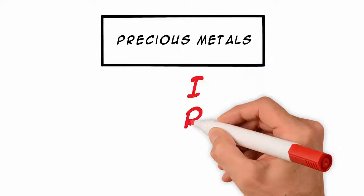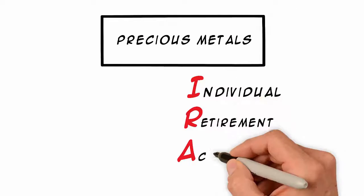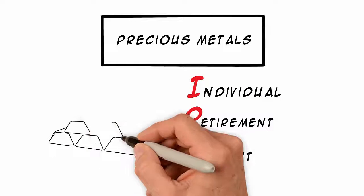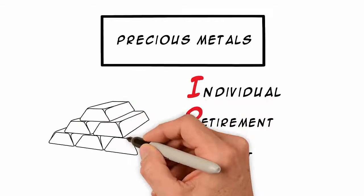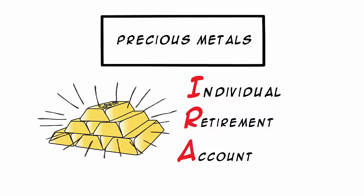A precious metals IRA is an individual retirement account in which physical gold or other approved precious metals are held in custody for the benefit of the IRA account owner.